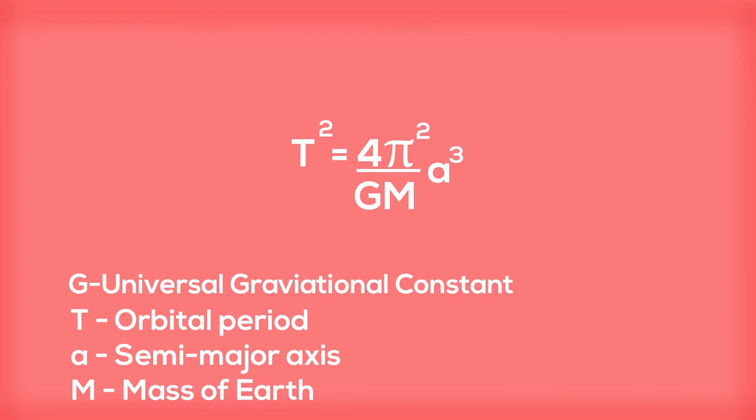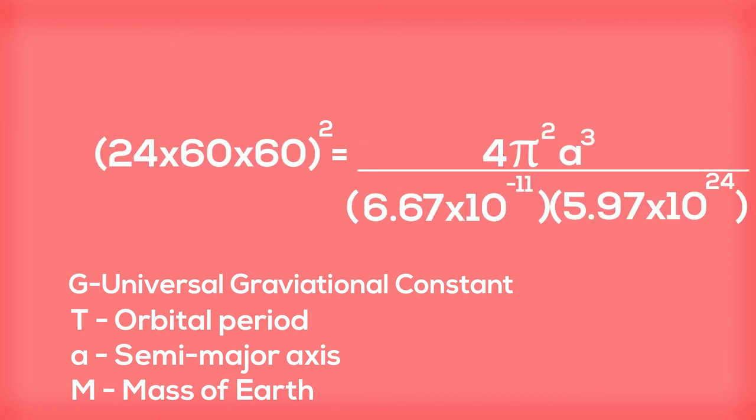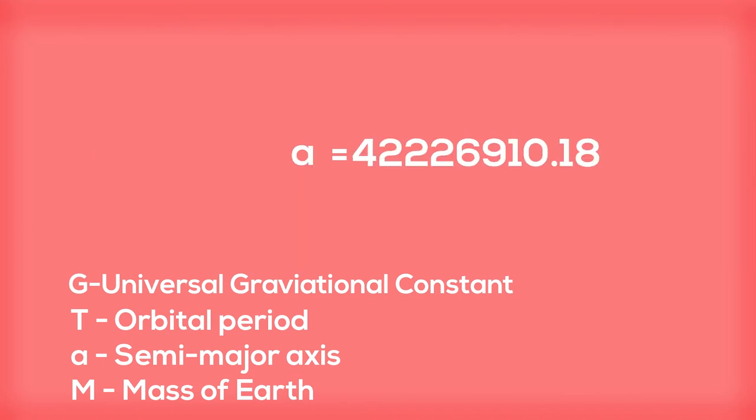Where T is the orbital period, a is the semi-major axis, G is the universal gravitational constant, and M is the mass of the Earth. All we have to do is substitute in the values for T, G, and M. Simplify the equation and you'll get the answer for a.